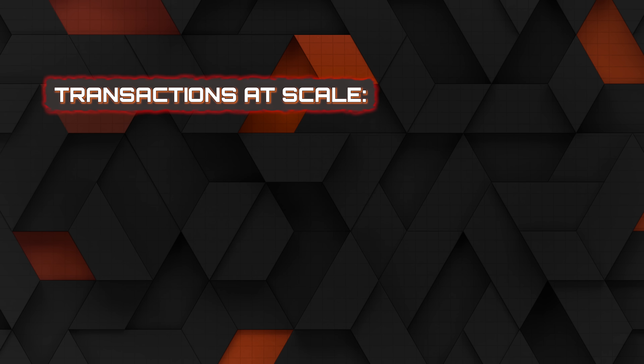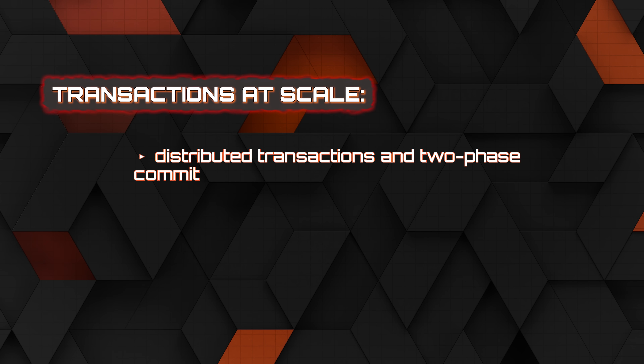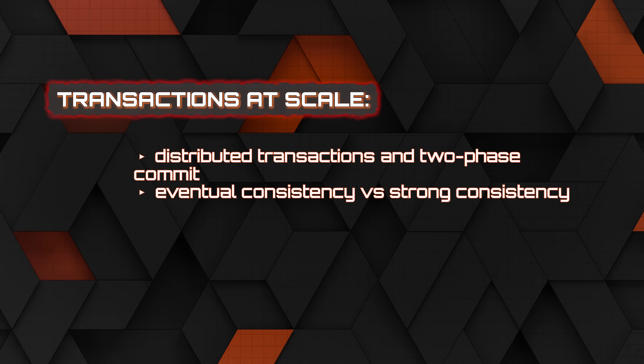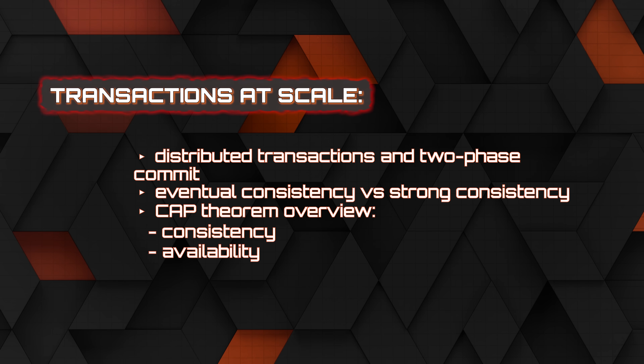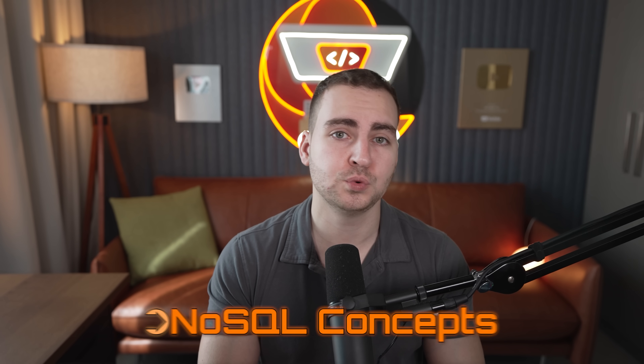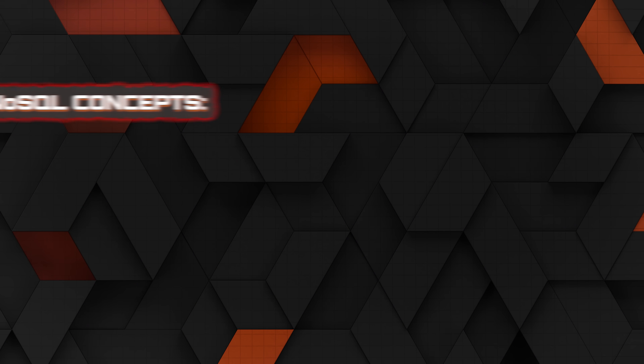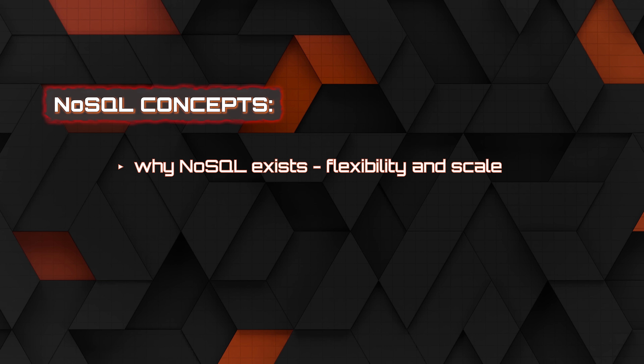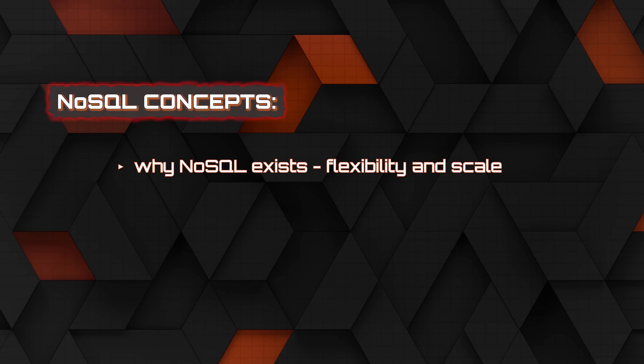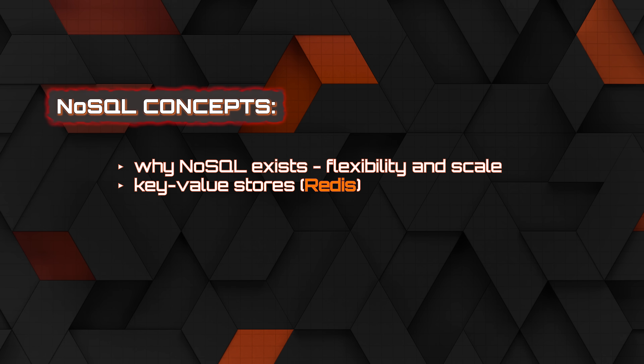Look at transactions at scale — distributed transactions and two-phase commits, eventual consistency versus strong consistency, and things like the CAP theorem: consistency, availability, and partition tolerance. Then move into NoSQL concepts. Almost everything mentioned so far relates to SQL databases, which is intentional — that's where you learn the most. Once you've learned that, start looking at NoSQL: key-value stores like Redis, understanding why NoSQL databases exist and when they fit into your system.